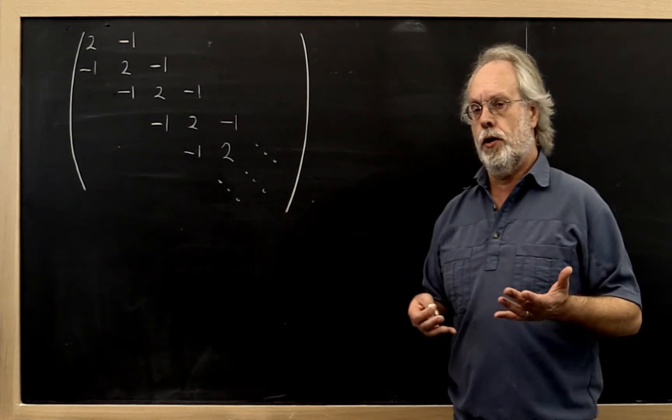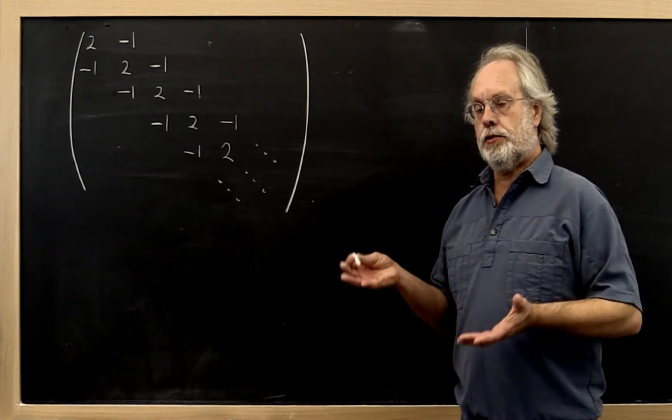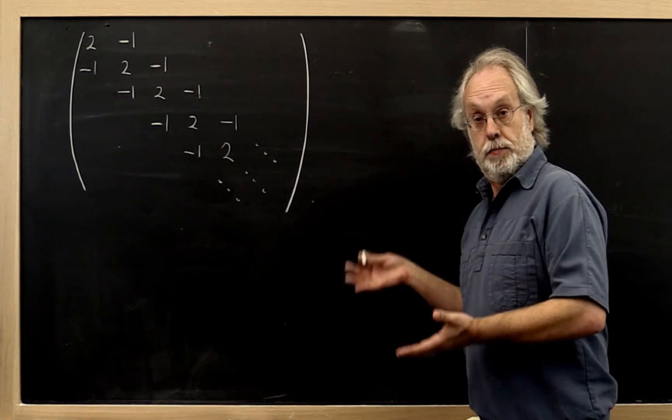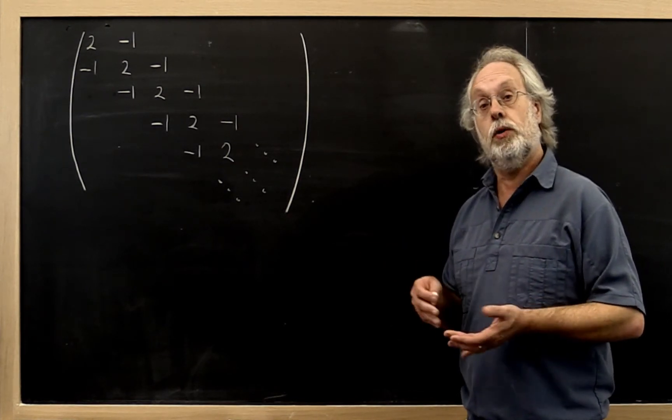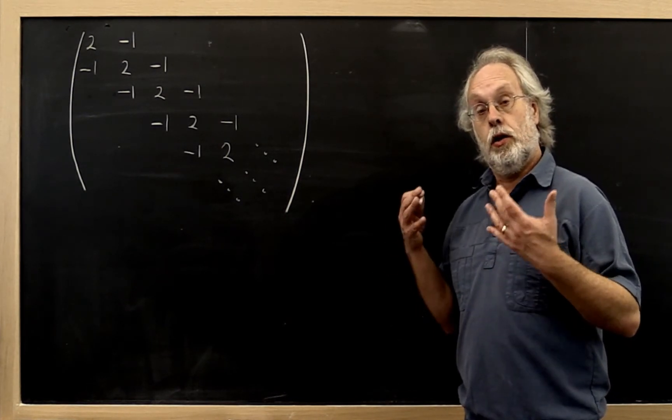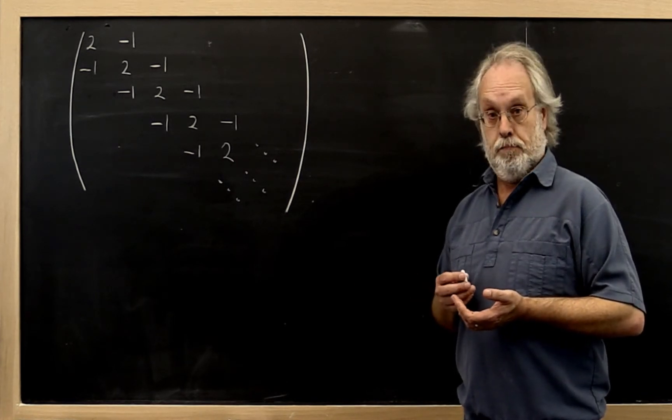What did we learn about factoring symmetric positive definite matrices? We learned that we can deploy the Cholesky factorization for that. And how would that algorithm work?